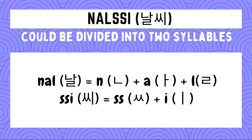How do we write Nalssi in Hangul? It is composed of two syllables. The first syllable NAL is written by drawing first a NIAN character, an A character, and a RIEUL character. The second syllable SHI is written by drawing a ssang-siot or double-siot character followed by an I character. We combine the Hangul for each of these two syllables — NAL plus SHI — to form the Hangul of the word Nalssi.